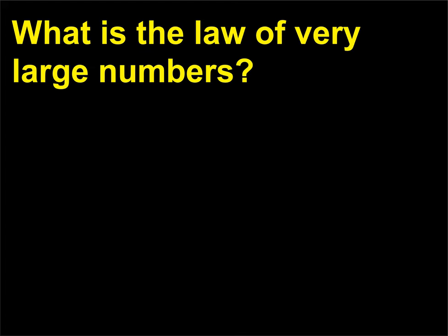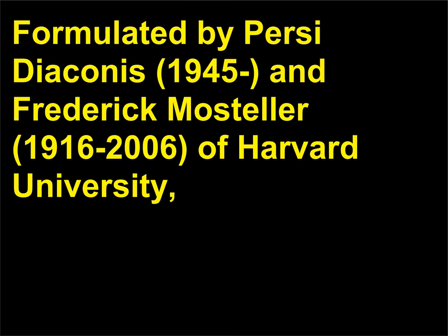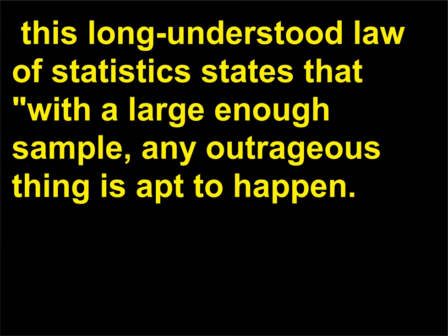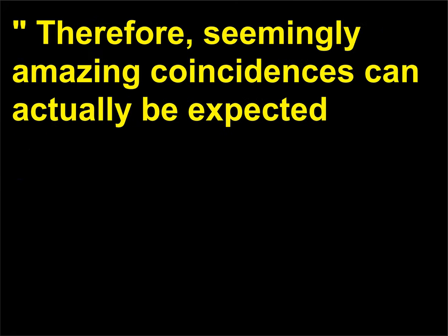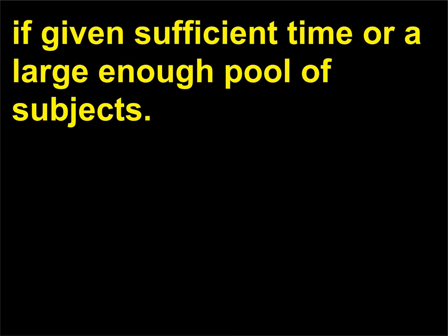What is the law of very large numbers? Formulated by Percy Diaconis, 1945, and Frederick Mosteller, 1916–2006, of Harvard University, this long-understood law of statistics states that with a large enough sample, any outrageous thing is apt to happen. Therefore, seemingly amazing coincidences can actually be expected, if given sufficient time or a large enough pool of subjects.